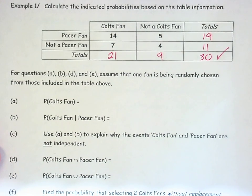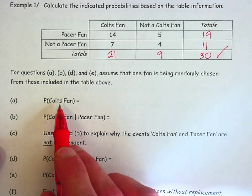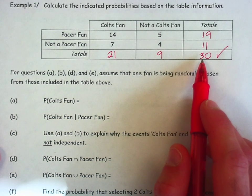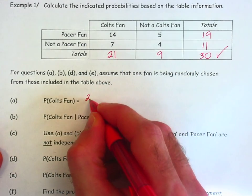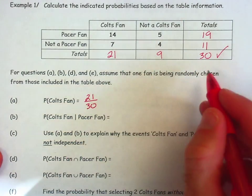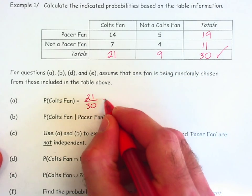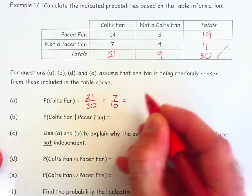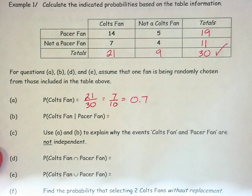So in question A, I'm interested in the probability that I select one Colts fan from among these 30 individuals. So there are a total of 21 Colts fans out of a total of 30 individuals that I could have selected. We're done. If you wanted to, you could reduce it. What would that reduce to? Seven-tenths. You could write it as a decimal if you want to. Any of those would be a perfectly fine answer.